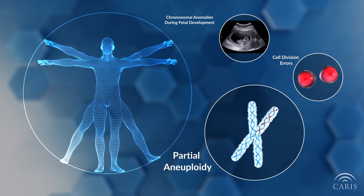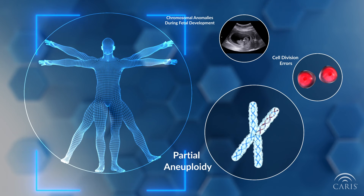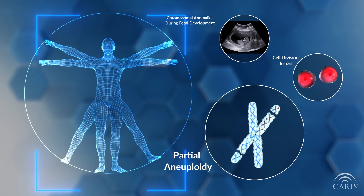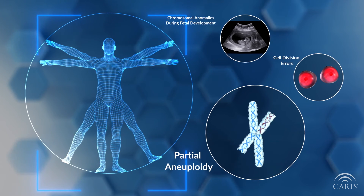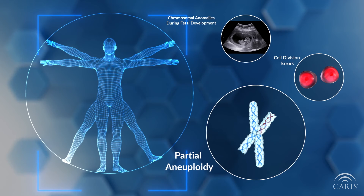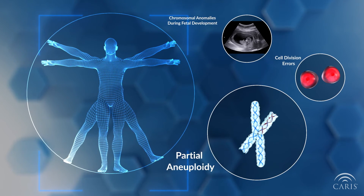Another type of error that can occur in cancer is called partial aneuploidy. Partial aneuploidy happens when a chromosome breaks and only parts of the chromosome are gained or lost following cell division.